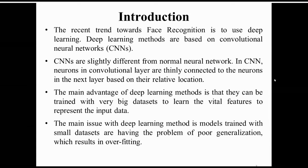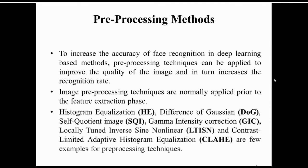The main advantage of deep learning is that it requires a huge database to learn the vital features represented in the data. The main problem is that we do not currently have huge databases in our experimental data, which leads to poor generalization and results in overfitting. To increase face recognition accuracy, we decided to perform pre-processing of data through histogram equalization.